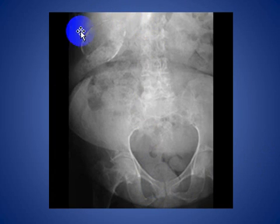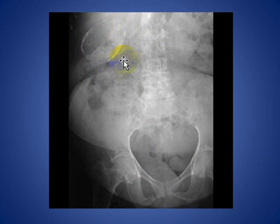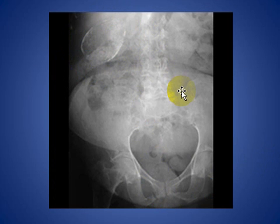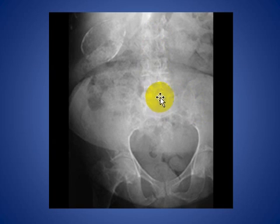Here you see calcification in the gallbladder wall. This is called porcelain gallbladder, and this is a pre-malignant condition. There are also degenerative disc disease changes involving the dorsal lumbar spine.